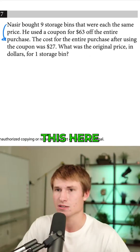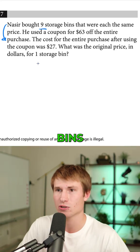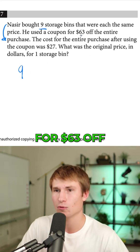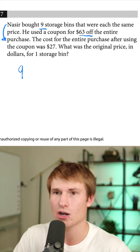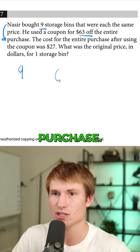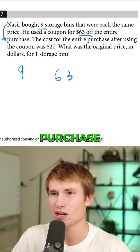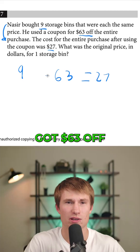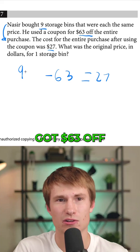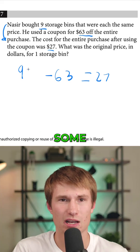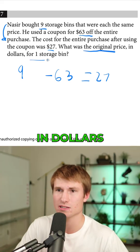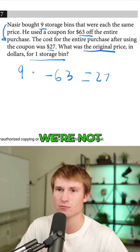Let's read through the problem. Nasir bought nine storage bins that were each the same price. He used a coupon for $63 off the entire purchase. The cost for the entire purchase after using the coupon was $27. We know he got $63 off and it's nine times some variable. What was the original price in dollars for one storage bin?